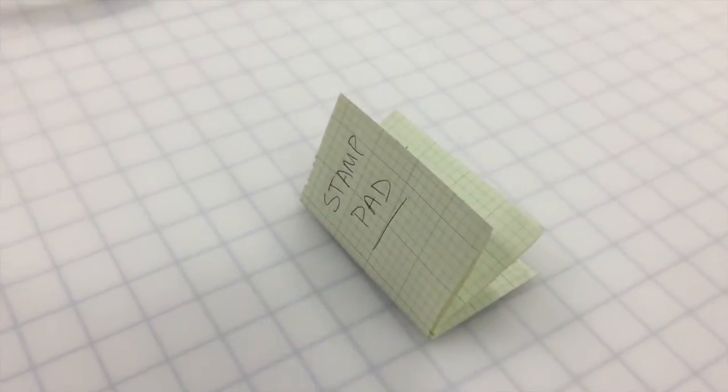Our third prototype is the stamp book, which is a way for kids to keep track of the exhibits they visit on their own.